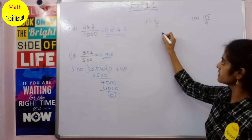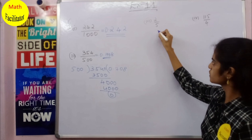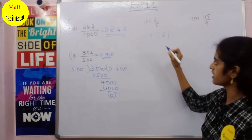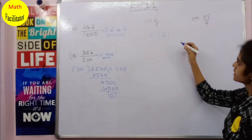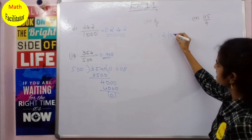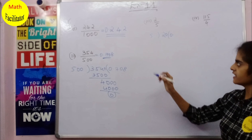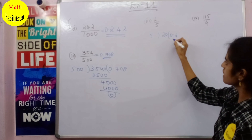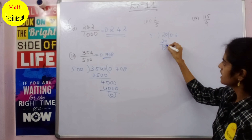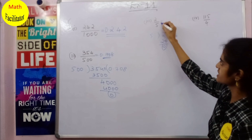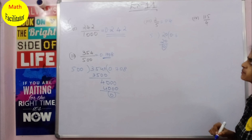Next you have 2 divided by 5. Since 2 is smaller than 5, write a decimal point and take 0: 5 × 4 = 20. So 2/5 = 0.4. Very simple.